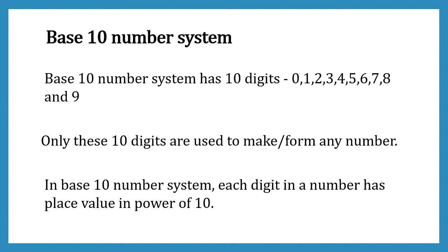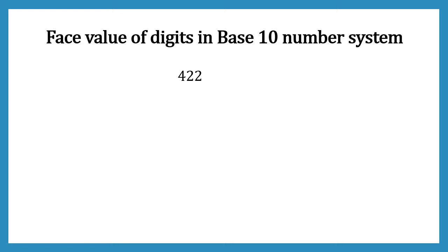Let's look at the face value. I have taken number 422 to explain face value and place value. We will start from right to left. Our right most digit is 2 and its face value also is 2. Our second digit from right is 2 and its face value also is 2. Our third digit from right is 4 and its face value also is 4.